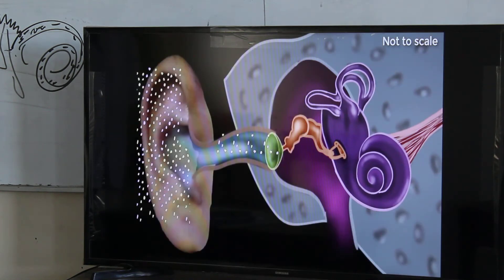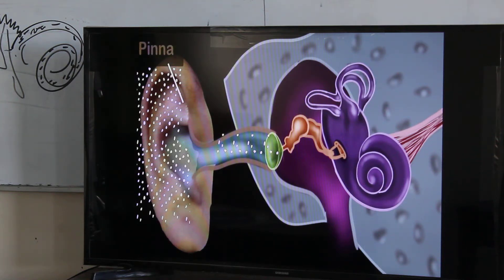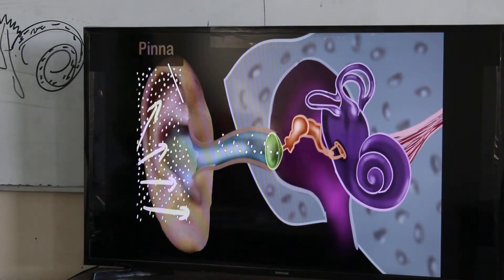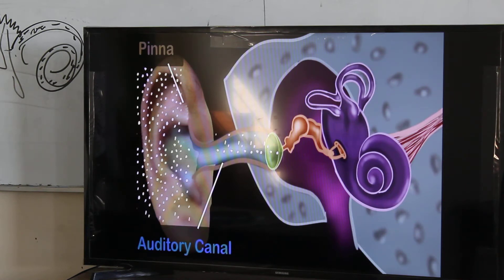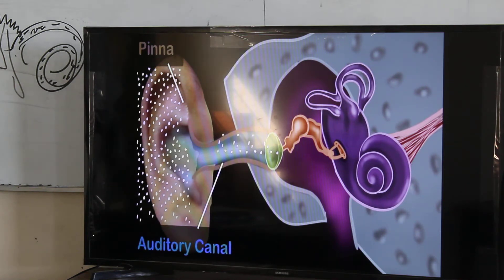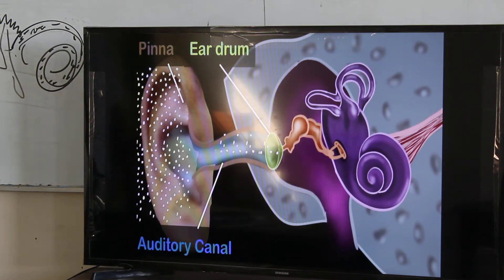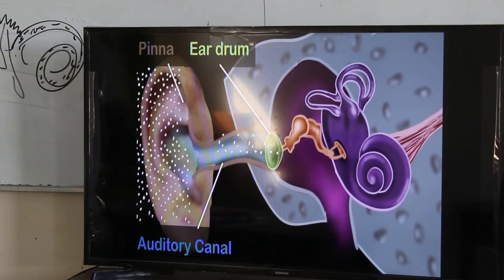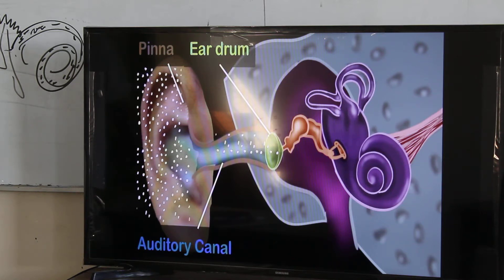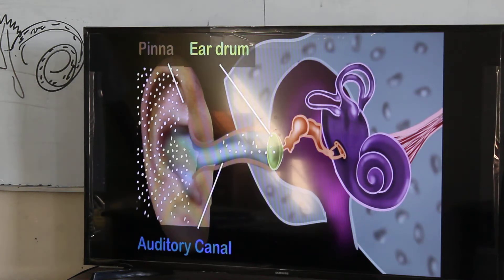The outer ear starts with the pinna. It's the part that you can see and touch. Or, in my case, the part that the model is spread off. Its job is to collect as much sound waves as possible and channel it into the auditory canal. The sound waves pass through the auditory canal and eventually meet the ear drum, which is showing green over here.